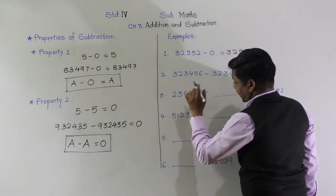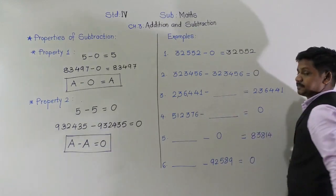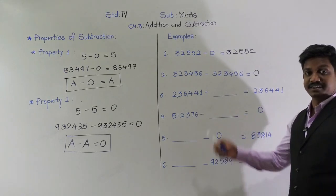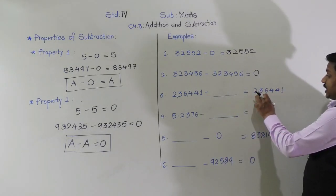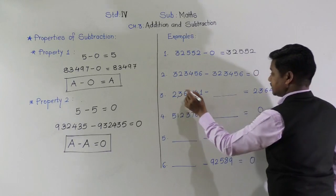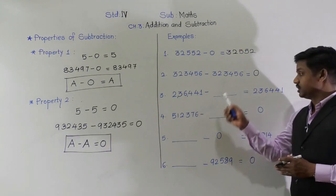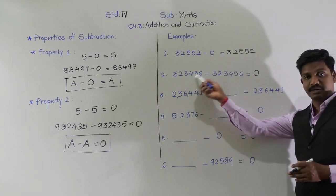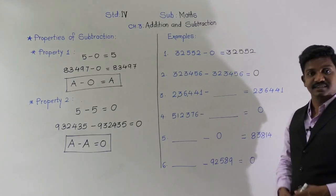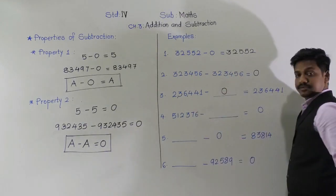Next: 2,36,441 minus blank equals 2,36,441. The same number is the answer. So which number must have been subtracted? When we get the same number as the answer, it means we subtracted 0 from the number. That is the first property: a minus 0 = a.